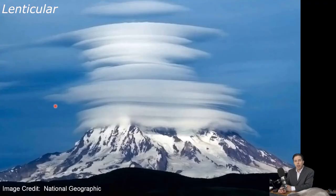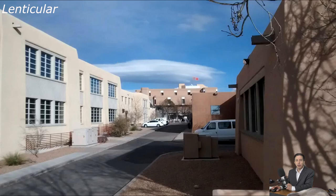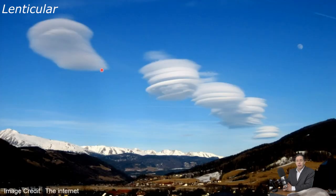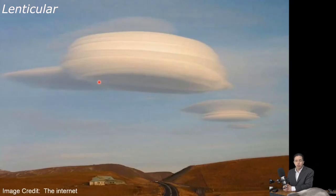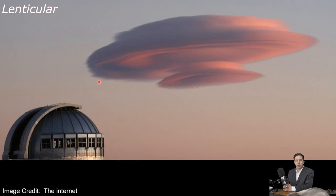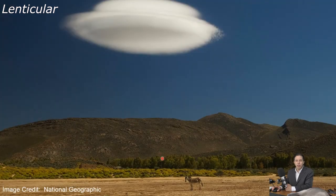Sometimes lenticular clouds occur in stacks — here's Mount Rainier with a whole stack of them on top. Here's an isolated lenticular cloud over UNM. Do you notice that some of these look like UFOs? You can find lots of pictures online where lenticular clouds look like flying saucers. There's a large number of 911 calls each year from people reporting UFOs when they are actually seeing lenticular clouds — yes, some of them do look like the mothership has arrived. Here's one from National Geographic, and a little zebra in this picture that was taken right before it was abducted.